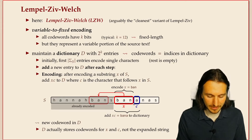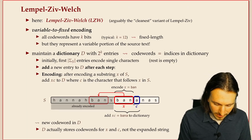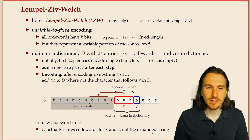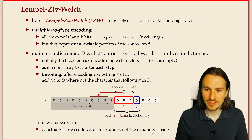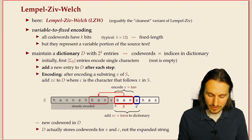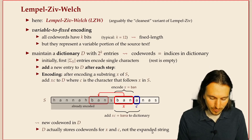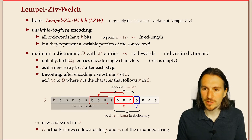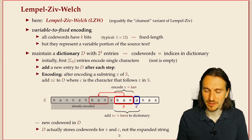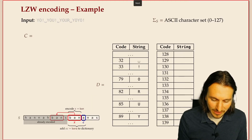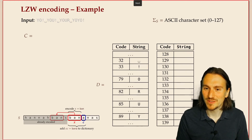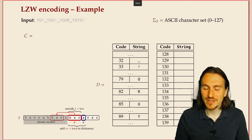As a small implementation remark: when implementing this, we would not store the string in the dictionary explicitly. Instead, since we have a code word for x already, we can store just that code word plus the new character. So we don't have to store very long strings — that's an implementation detail. Let's go through an example to see how this works and how we find x.